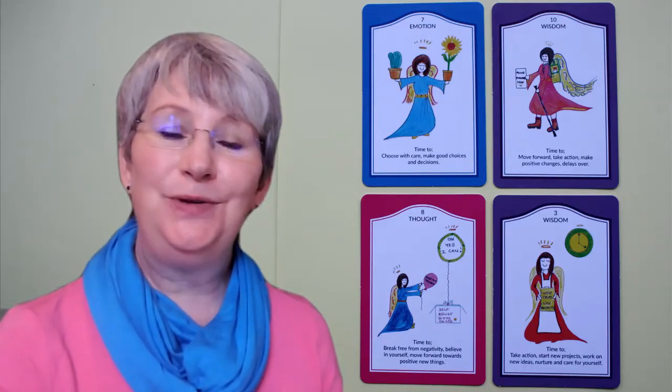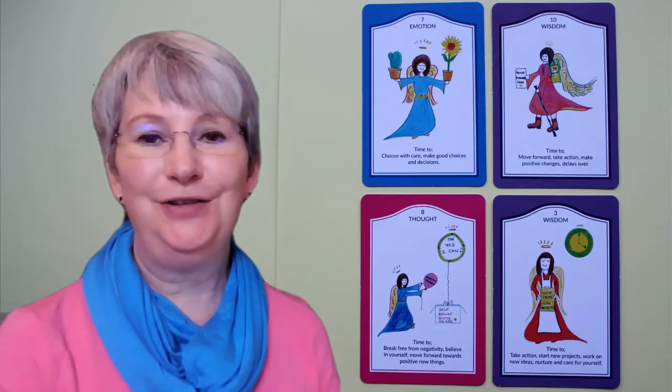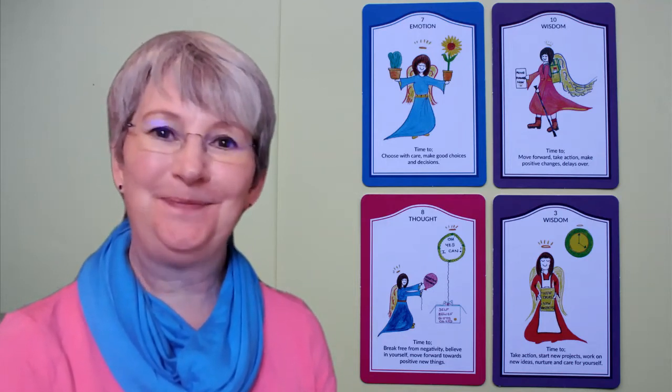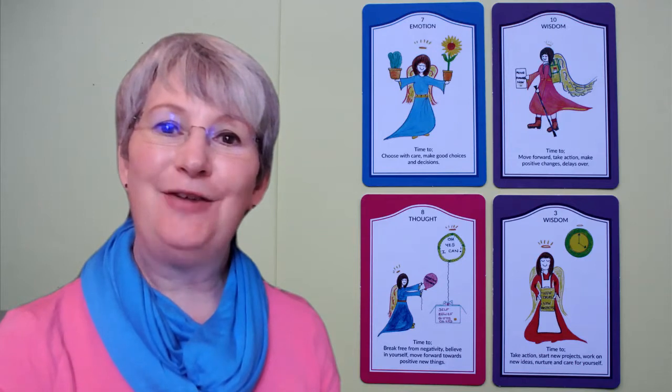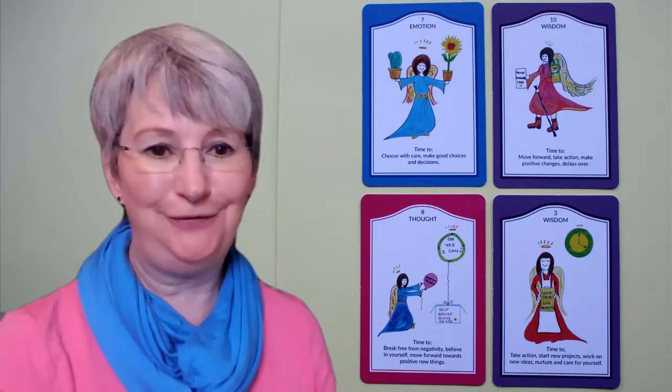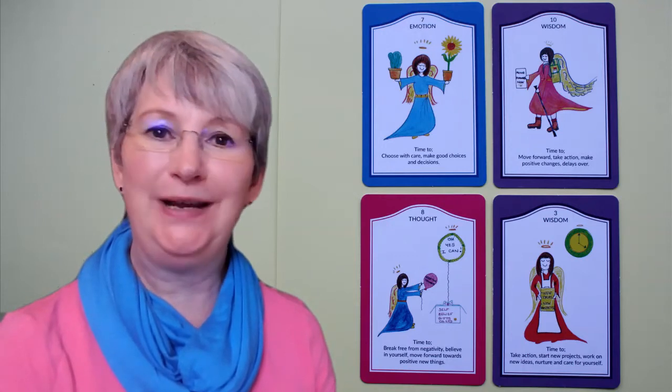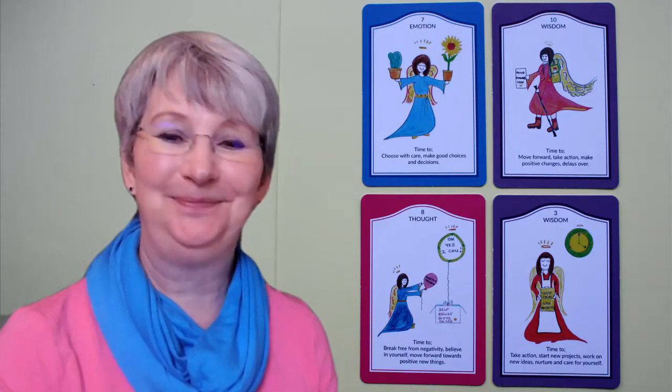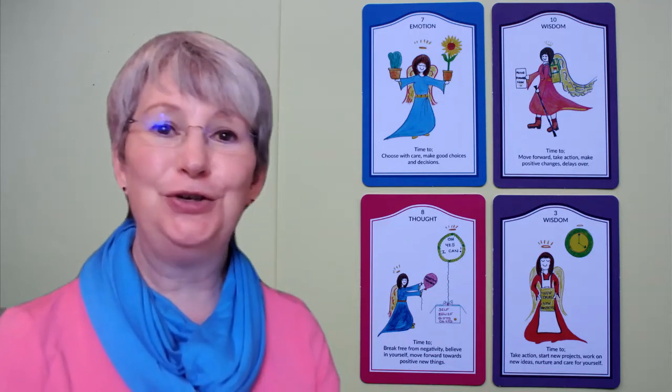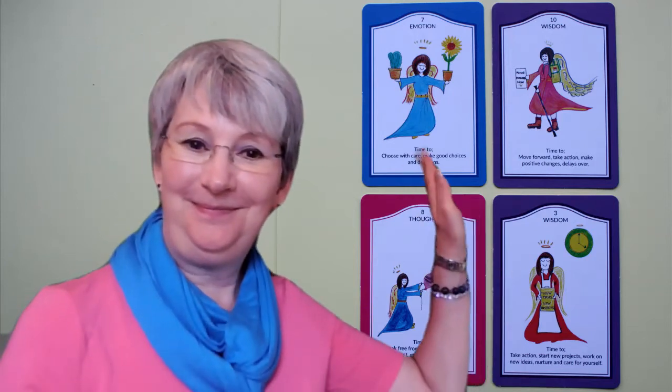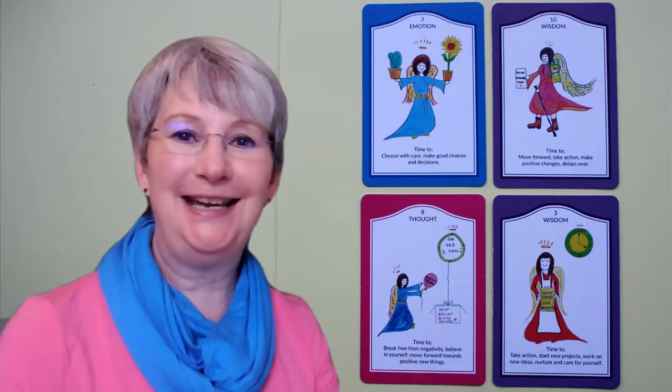Hi everyone, it's Anne with your angel oracle card reading for the coming week starting the 14th of June 2021. We think about this as our angel homework for the coming week, lovely things we can be mindful of to place into our week so we have a really positive and life-enhancing week. This reading is for the zodiac star sign of Capricorn and I'm using my time to shine deck.